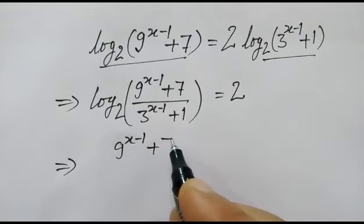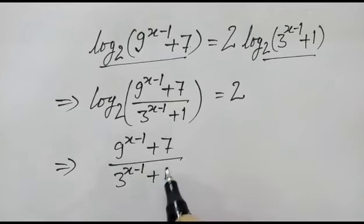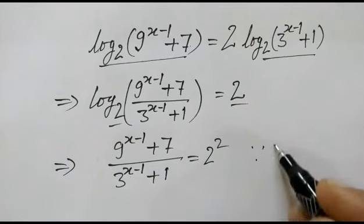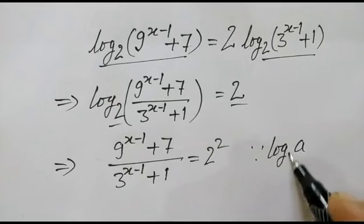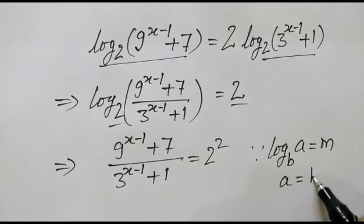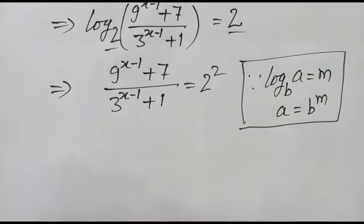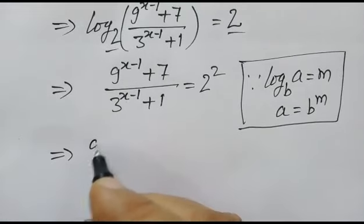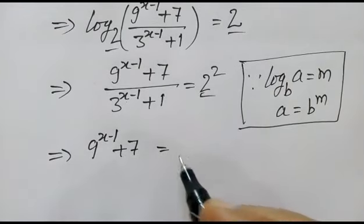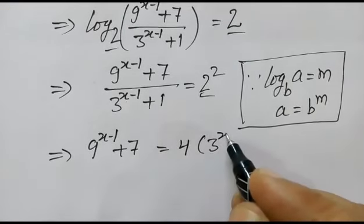So (9^(x-1) + 7) over (3^(x-1) + 1) is equal to 2 squared, which is 4. This follows because if log base b of a equals m, then a equals b to the power m. Therefore 9^(x-1) + 7 is equal to 4 times (3^(x-1) + 1), which gives 4 times 3^(x-1).